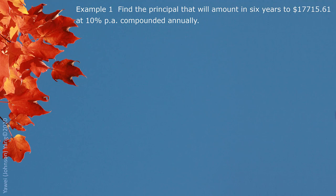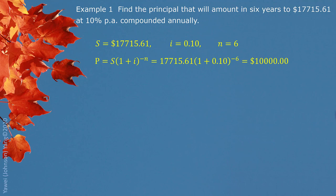Example 1: Find the principal that will amount in 6 years to $17,715.61 at 10% annual interest rate compounded annually. The basic information — $17,715.61 should be considered as future value. We have the periodic interest rate of 10%, since interest is compounded annually. For 6 years, our compounding period is 6. Putting them in the formula looking for present value, the answer is $10,000.